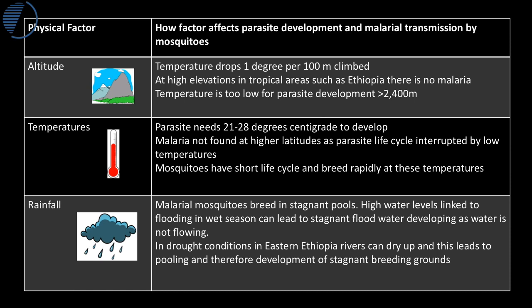The third physical factor is rainfall. In Ethiopia, the key rainy season is June to August. The key transmission season for malaria occurs with a lag in September to December, right after the rainy season, because there are many stagnant pools. Malarial mosquitoes love to lay their eggs in still water, and this is when main transmission occurs. There is also some transmission after the short rainy season from February to March.